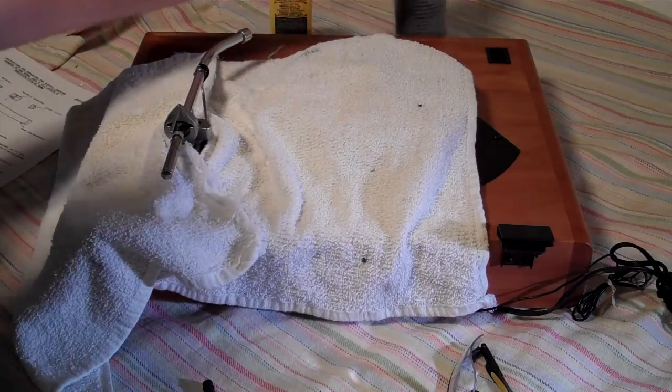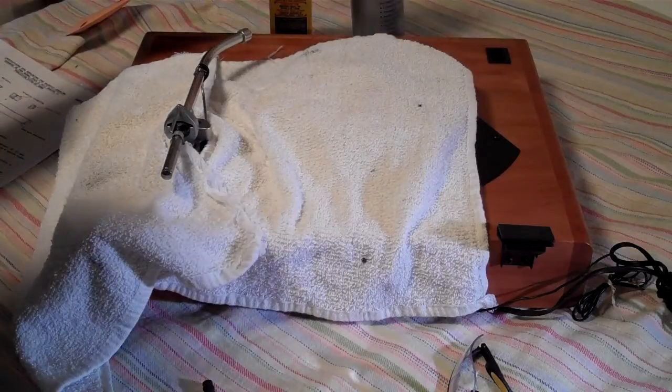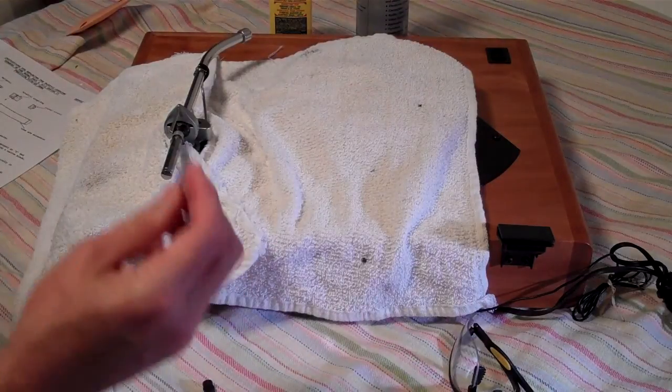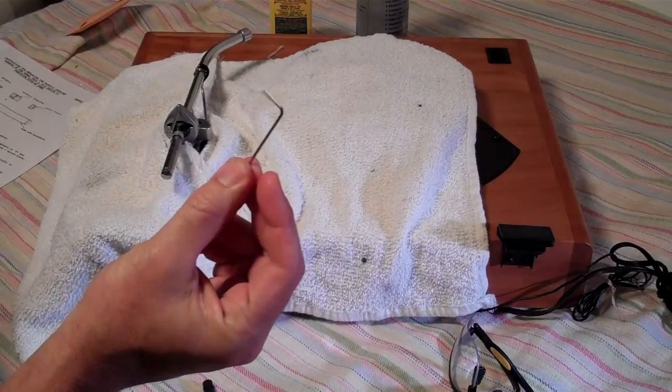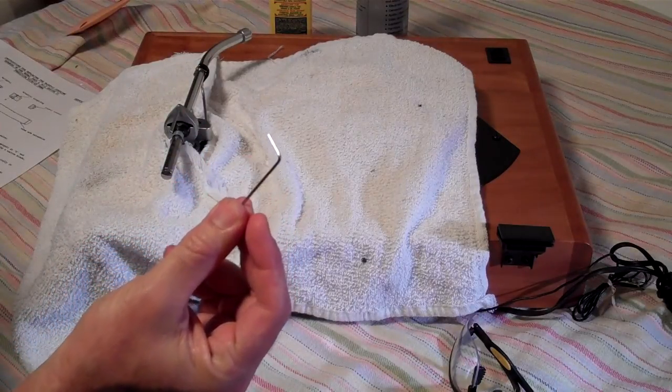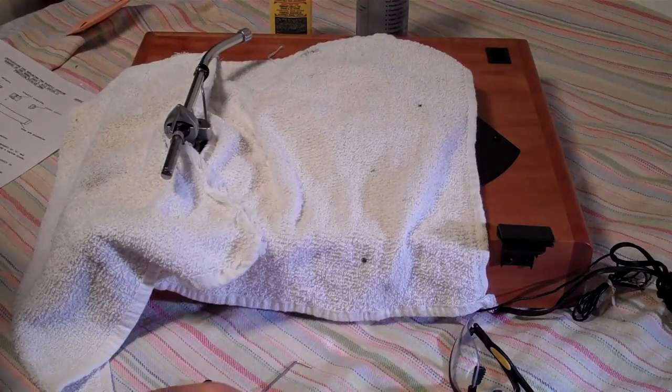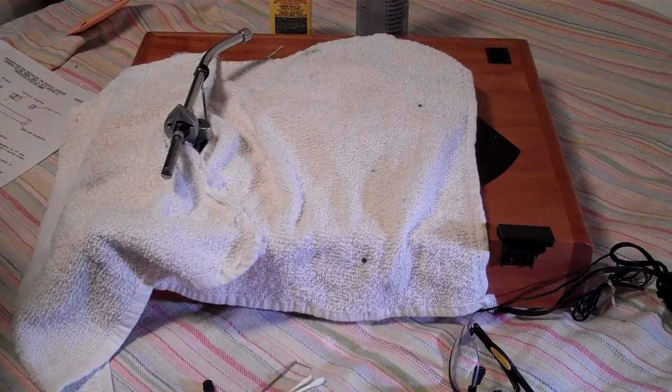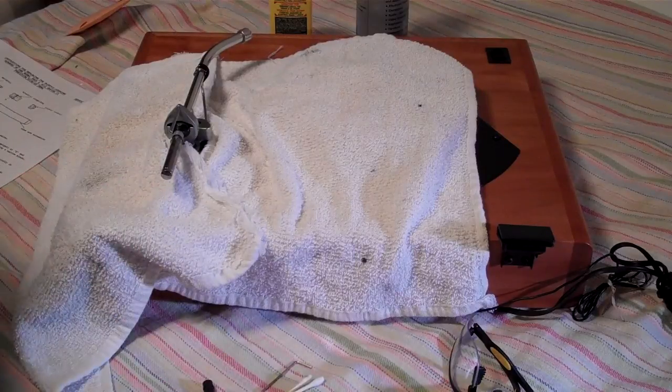I've got an air sprayer to help blow out small parts, some safety glasses, the small Allen wrench that I need to remove the counterweight, which is already removed in this case. I've got some q-tips, some super glue, and a small straight edge screwdriver.